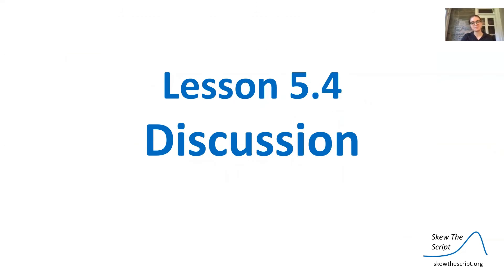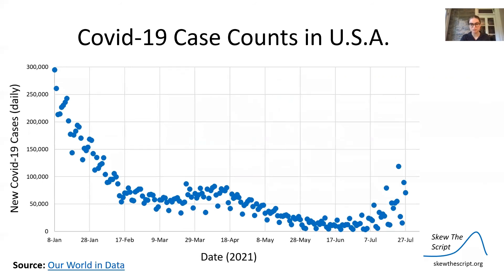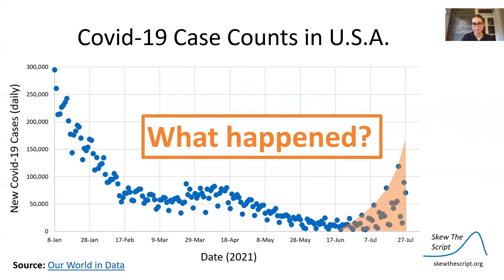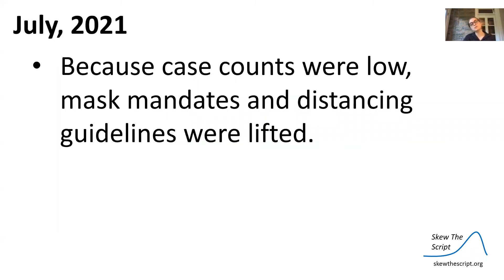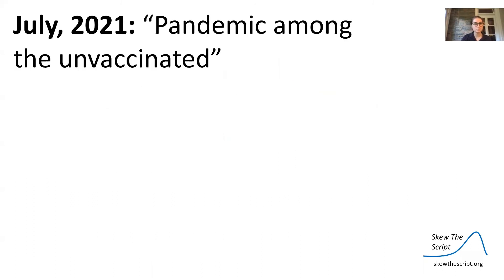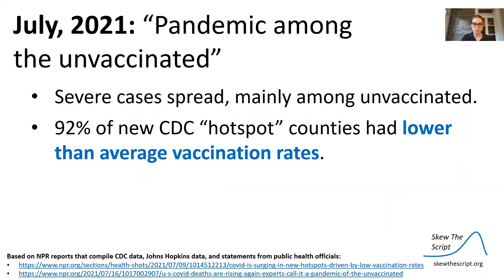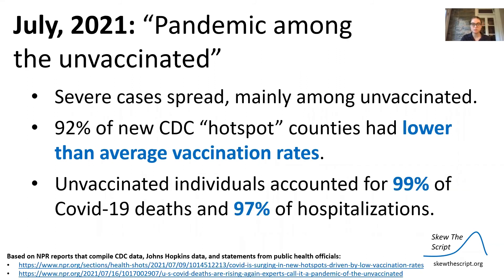Was this exponential decay caused by the vaccine or other factors? Extending the graph, we see an outbreak in July 2021 — a warm summer month — that looks like exponential growth. In July 2021, because case counts were low, mask mandates and distancing guidelines were lifted, and simultaneously the Delta variant began spreading. There was a pandemic among the unvaccinated: 92% of new CDC hotspot counties had lower than average vaccination rates, unvaccinated individuals accounted for 99% of COVID-19 deaths, and 97% of hospitalizations.